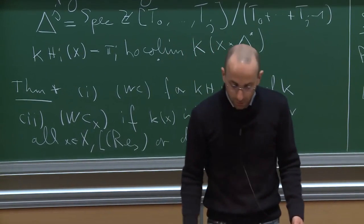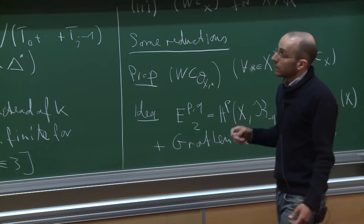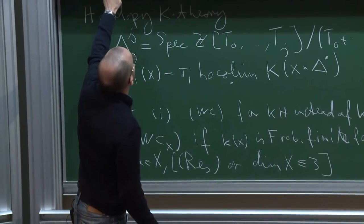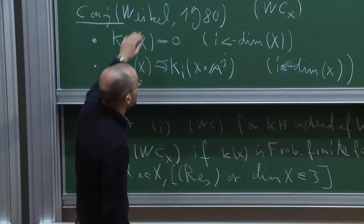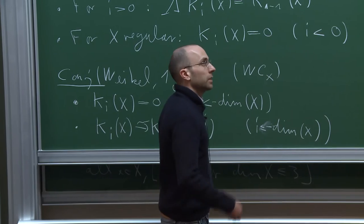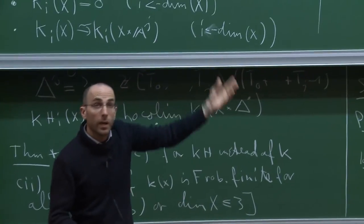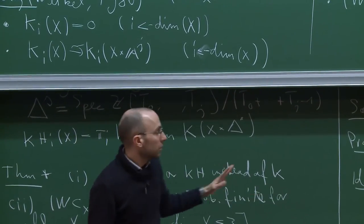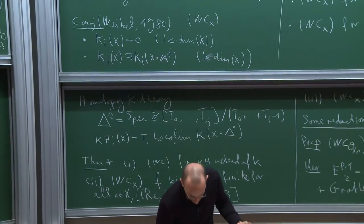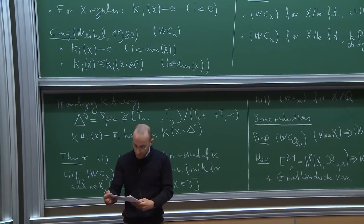We have now reduced to a simpler situation. In particular, in characteristic zero we now have resolution of singularities, because Hironaka proved this for quasi-excellent local rings. The basic idea in all proofs of Weibel's conjecture is: you need some vanishing result — for example, if X is regular then all negative K-groups vanish — and you need some descent result, so you resolve the singularities, apply this vanishing, and then apply descent. One definitely needs descent under blow-ups.